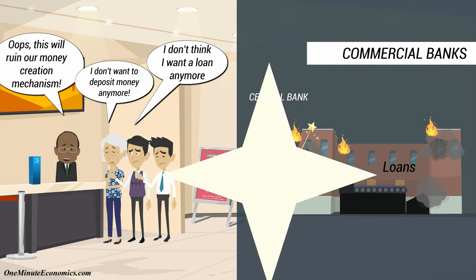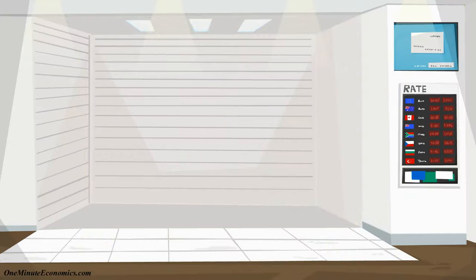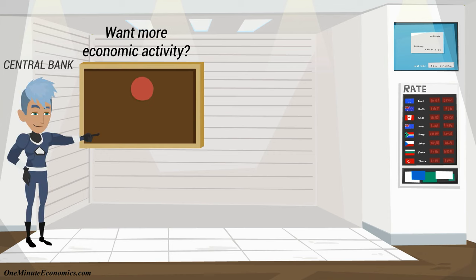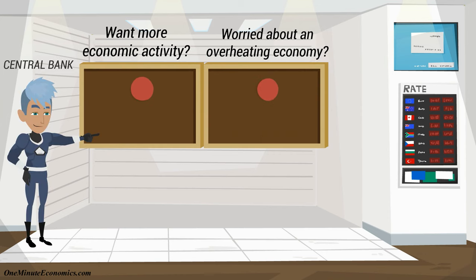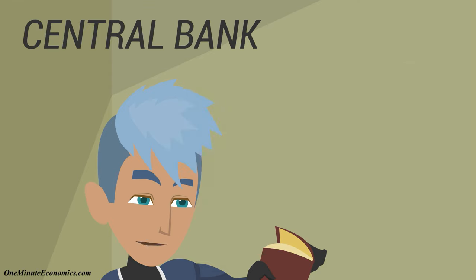Therefore, maintaining stability is a central bank's main goal. It can do that by managing interest rates — lowering them to stimulate economic activity, or increasing them if it thinks the economy is overheating.